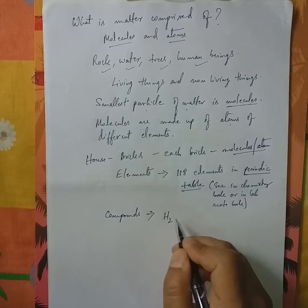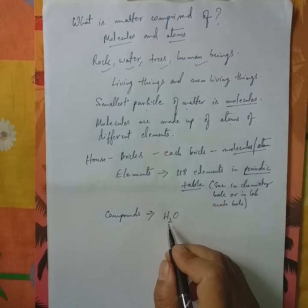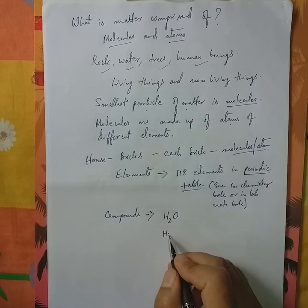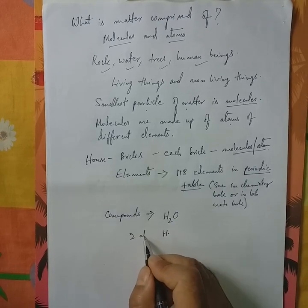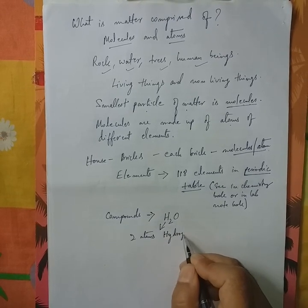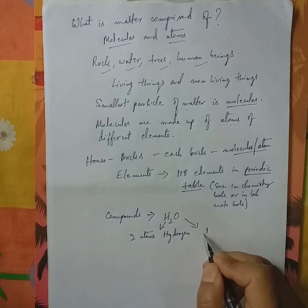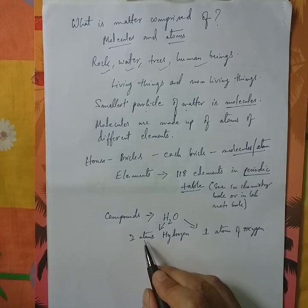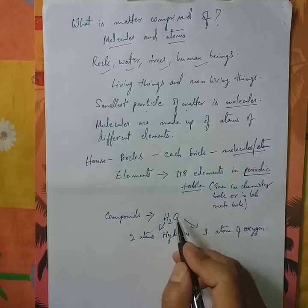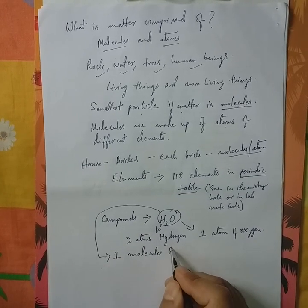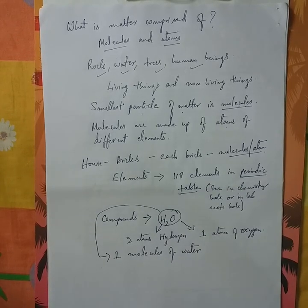Like example, very easy example is water. The chemical formula of water is H2O. Here, H stands for hydrogen. Two atoms of hydrogen are here. And one atom of oxygen is here. Combination of these two atoms and one atom gives us one molecule of water.